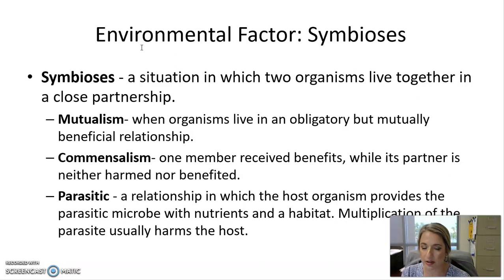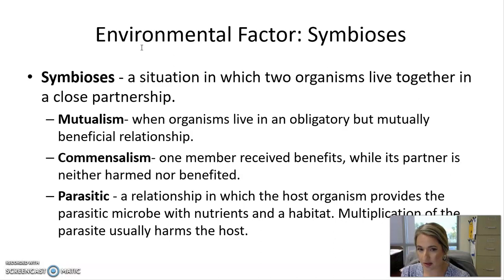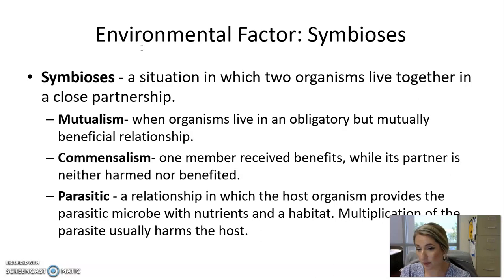In a mutualistic relationship, both parties benefit — meaning the microorganism benefits and the host it lives within also benefits. The best example is E. coli strain K12 that lives in our large intestine. This strain produces vitamin K for us, which helps with blood clotting, so it's very beneficial. E. coli also benefits because it lives in a nutrient-rich environment. Both parties benefit, making it a mutualistic relationship.